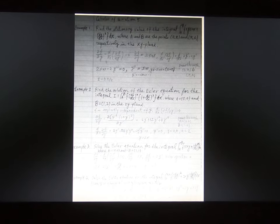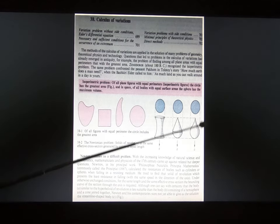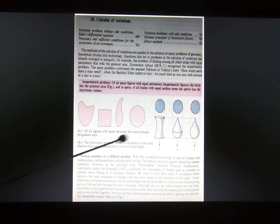Next I will show you some examples from books, so calculus of variation. You can see all the figures with equal parameter. The circle includes a great area, and it's the same cross section, same height. And these are the greatest solid revolution of volume, something like that.